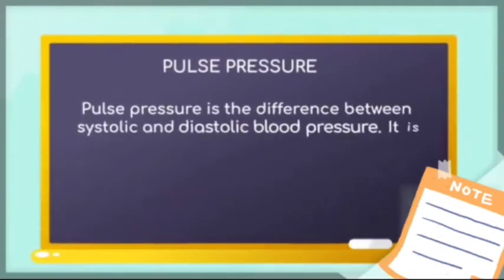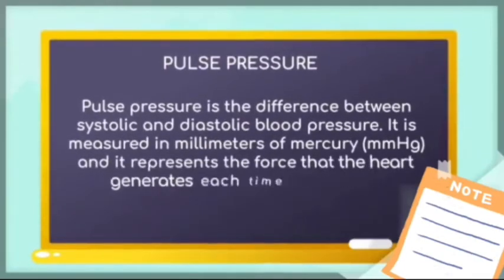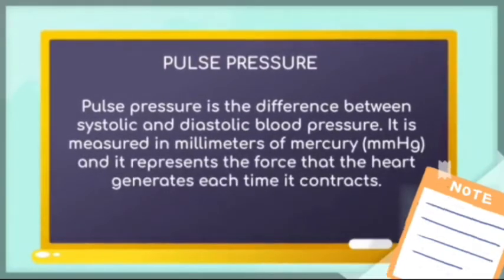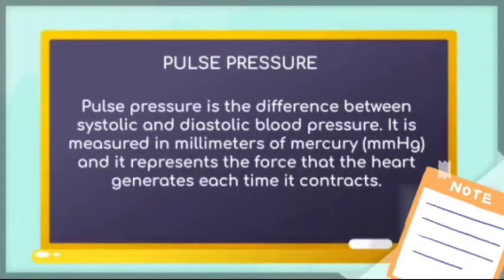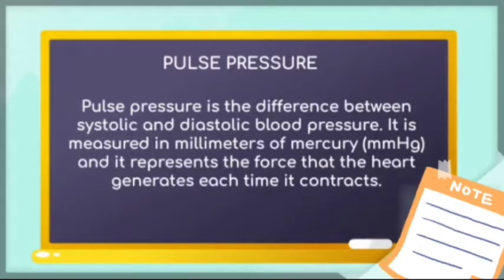Pulse pressure is the difference between our systolic blood pressure, when the heart muscle contracts to pump blood out, and diastolic blood pressure, when the heart muscle relaxes. It is measured in millimeters of mercury and represents the force that the heart generates each time it contracts.